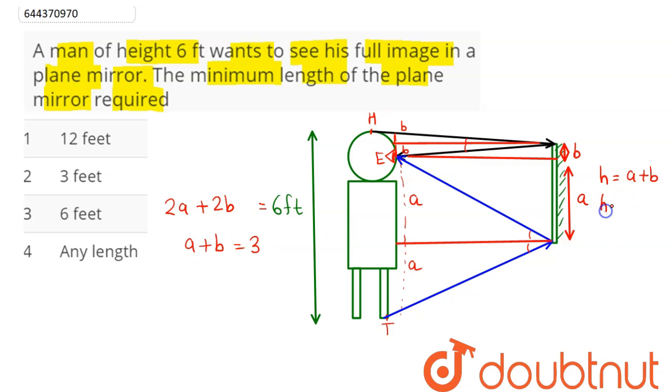That is, minimum height of the mirror is half the height of the man, that is 3 feet. That is, option number 2 is the correct answer, so 2 is our answer.